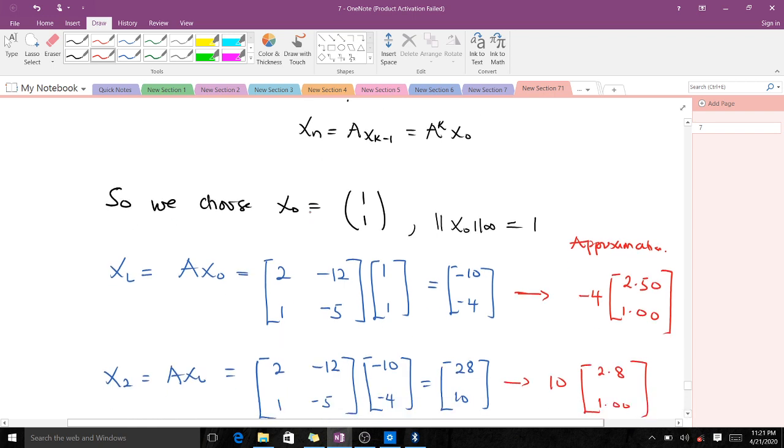We choose our initial guess x₀ to be (1, 1). The infinity norm of this is 1 because 1 is the largest element. Our first iteration is x₁ = Ax₀. When we do this matrix-vector multiplication, we get (-10, -4). After that, we use scaling.